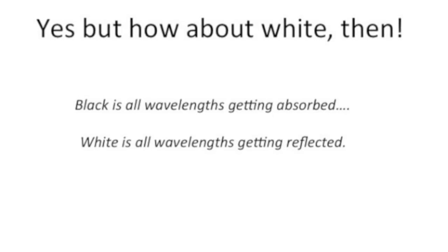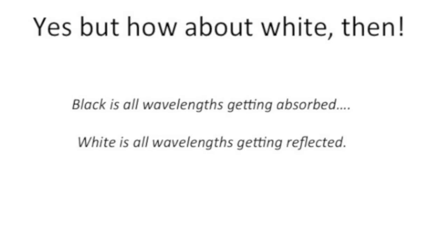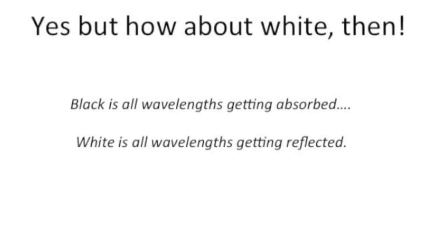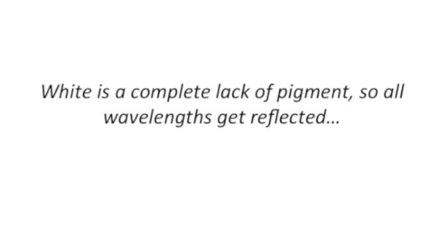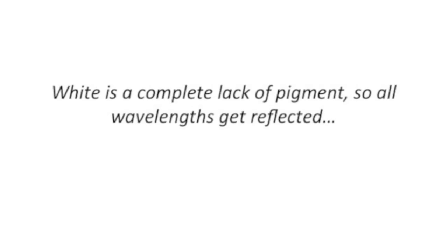I think it's most helpful to think of white as all of the wavelengths getting reflected, and black as all of the wavelengths getting absorbed. White is a complete lack of pigment, so all of the wavelengths - which means all of the colors - are actually getting reflected.